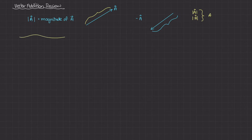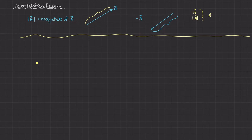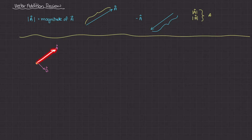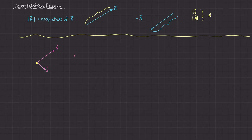Let's say we have a particle, and on this particle we have two vectors: vector A, pulling the particle up and to the right, and vector B, pulling it to the right but downwards a little bit. You'll notice that B is a little bit smaller than A. So just from looking at this picture drawn to scale, the magnitude of A is greater than the magnitude of B. That's why it's very important to draw vectors to scale when doing graphical comparison or addition.